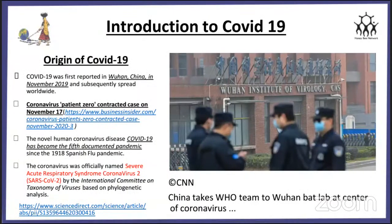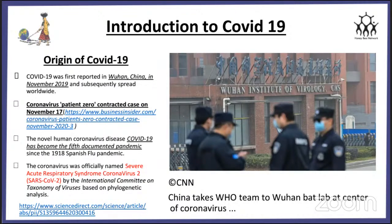Introduction to COVID-19. As you all know, COVID-19 was first reported in Wuhan, China in November 2019, and subsequently spread worldwide. Coronavirus patient zero — the first contracted case — was on November 17. The novel human coronavirus COVID-19 has become the fifth documented pandemic since the 1918 Spanish flu pandemic. The coronavirus was officially named severe acute respiratory syndrome coronavirus 2, that is SARS-CoV-2, by the International Committee on Taxonomy of Viruses based on phylogenetic analysis.